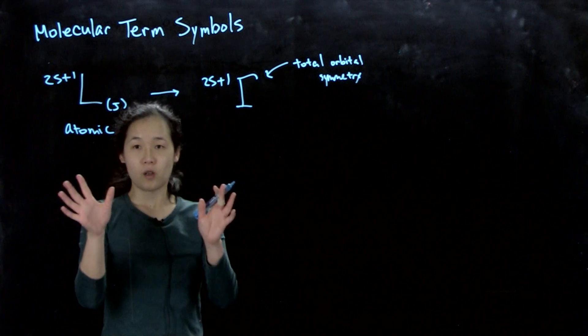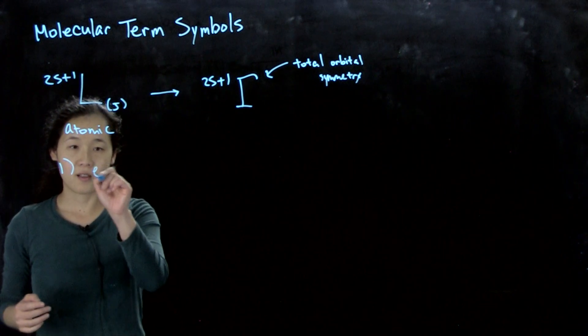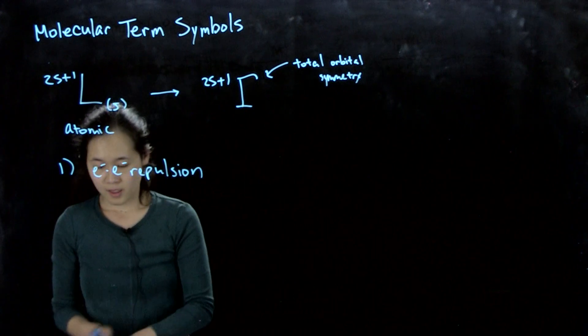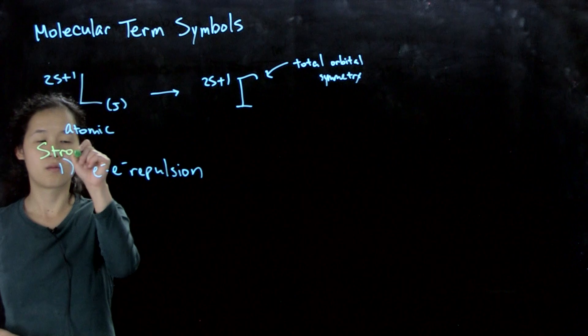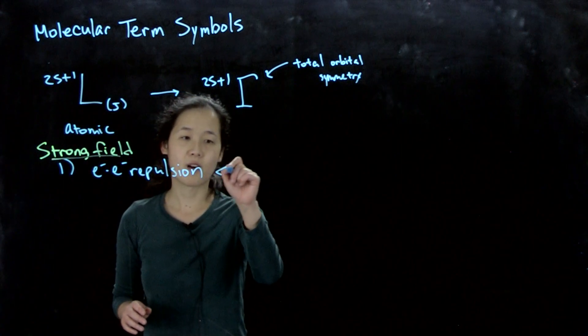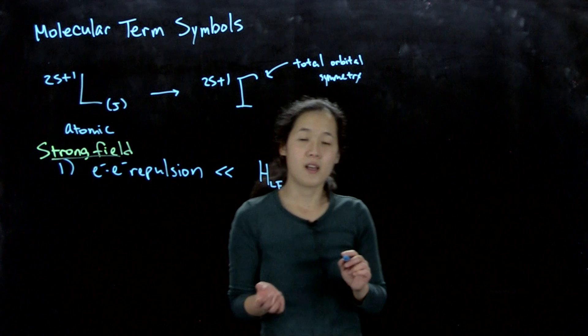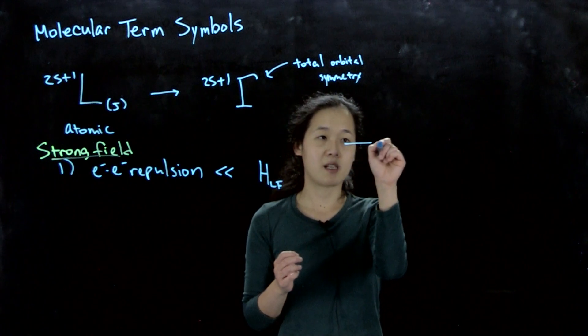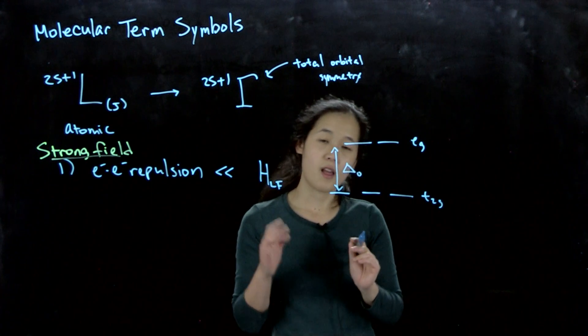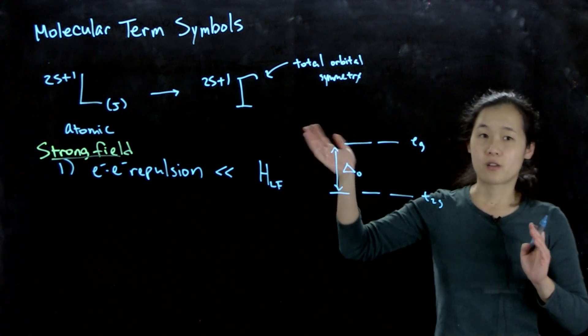So things that we're going to assume for this discussion is, one, we're going to assume that terms and atoms are split by electron-electron repulsion, this is what causes the difference between states in an atom. We're going to assume that this electron-electron repulsion is still going to be a lot smaller than the energy applied by our ligand field. So our ligand field splits our d orbitals, for example. Our d orbitals split into, let's say, an octahedral field, eg, t2g. We're saying that this ligand field splitting, delta O, is much larger than any electron-electron repulsion of states. So this affects how we order our final states for our molecular term symbols.